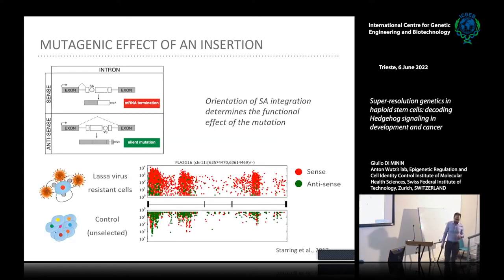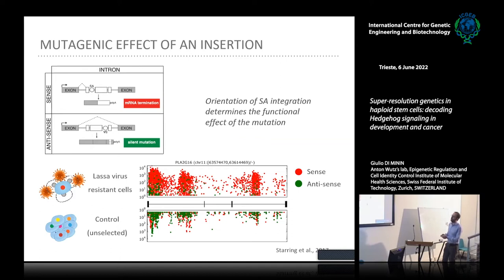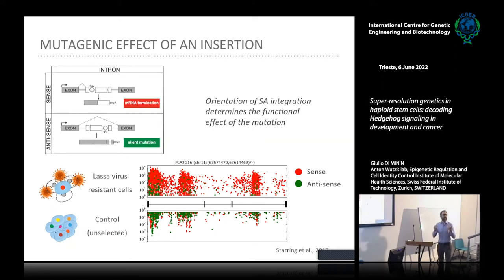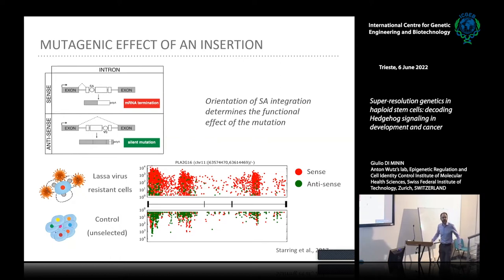This is nicely illustrated in an experiment where a group tried to identify novel factors involved in Lassa virus infection. All identified mutations are labeled with dots — red for sense (mutagenic) and green for neutral (antisense). In control libraries, we see an equal distribution between sense and antisense mutations. But after selection, since cell survival requires silencing this gene, we see an enrichment of mutagenic events and a progressive loss of neutral ones.